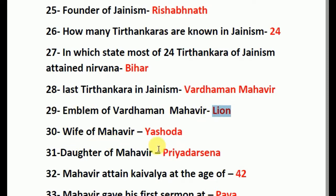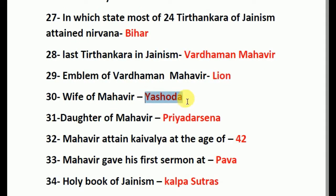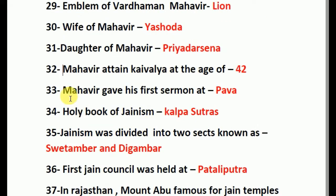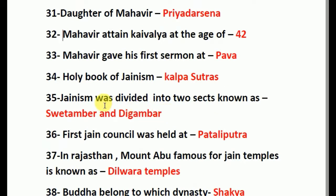The emblem of Mahavira is a lion. The wife of Mahavira was Yashoda and the daughter of Mahavira is Priyadarshini. Mahavira attained Kaivalya at the age of 42. Mahavira gave his first sermon at Pava. The holy book of Jainism is Kalpa Sutra.